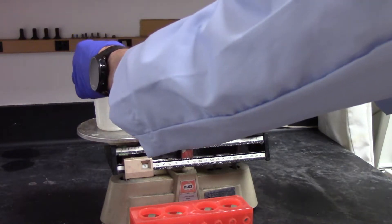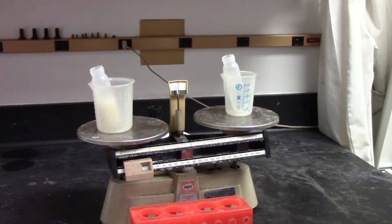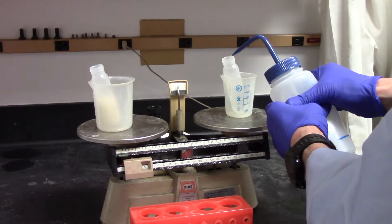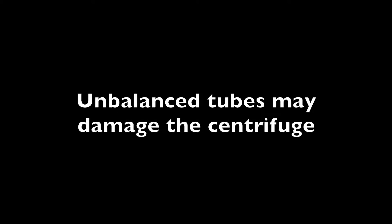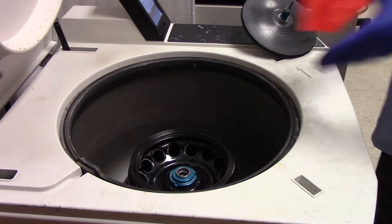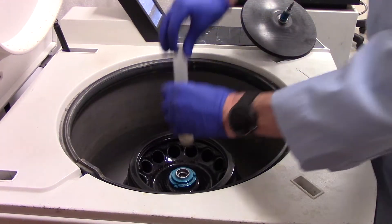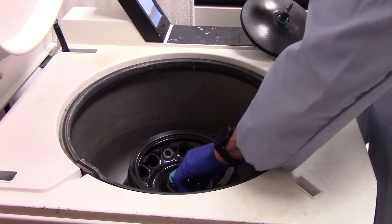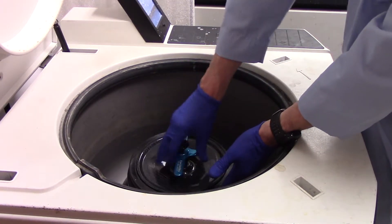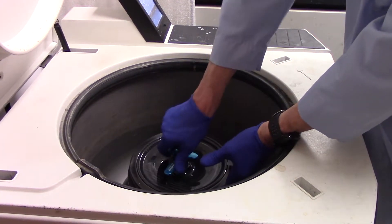Balance your tube with another high-speed centrifuge tube filled with water. Place your balanced tubes on opposite sides of the rotor in a centrifuge. Apply the lid to the rotor, making sure that it is tight but not too tight.